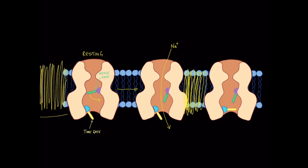If you imagine a whole row of these sodium channels down the muscle membrane: when one sodium channel experiences the depolarization of the muscle membrane, the voltage gate opens and sodium rushes through it, causing subsequent depolarization of the muscle membrane nearby, which then triggers the next sodium channel, and the next. This is how the wave of depolarization travels down the muscle membrane to cause a muscle contraction.